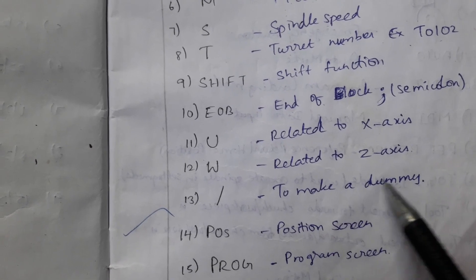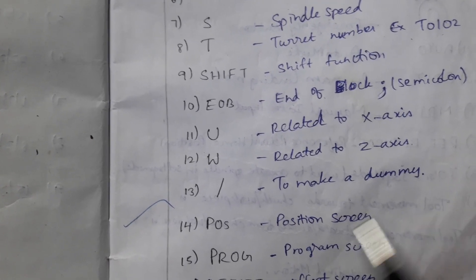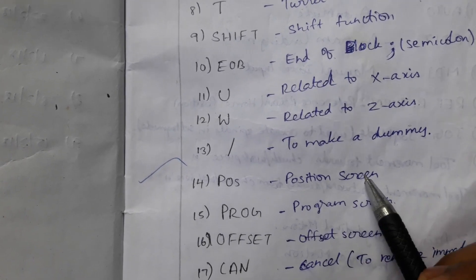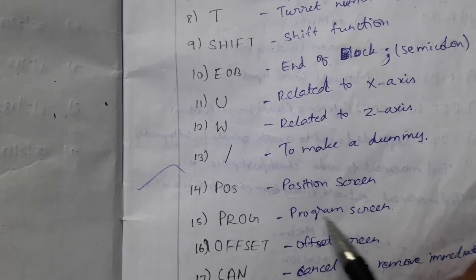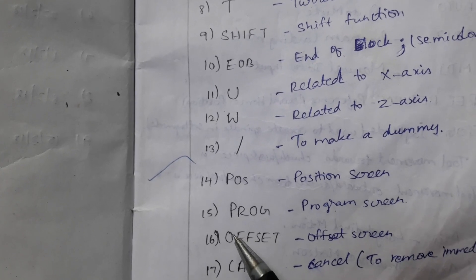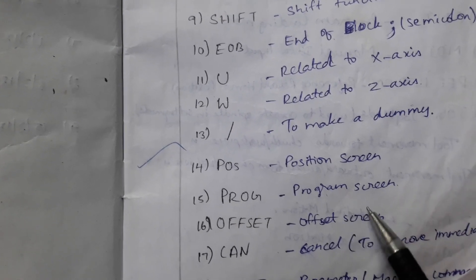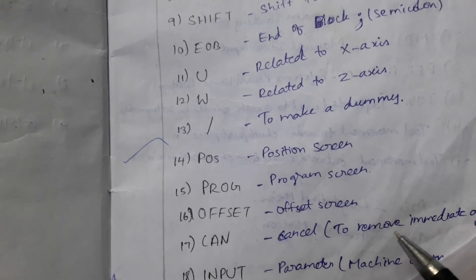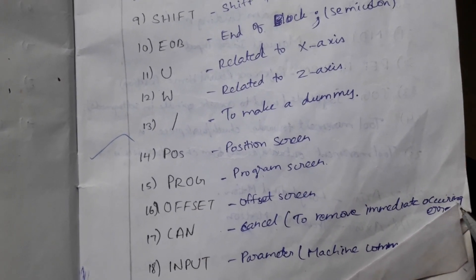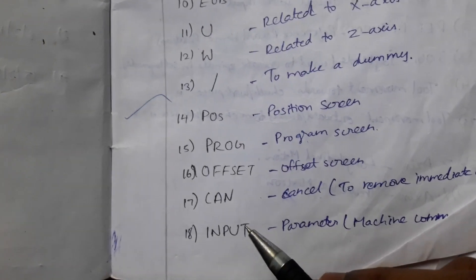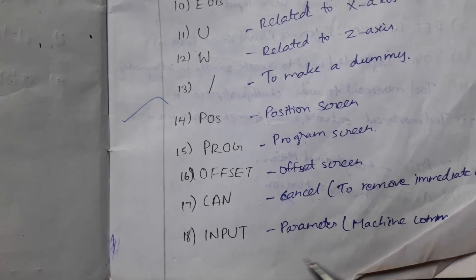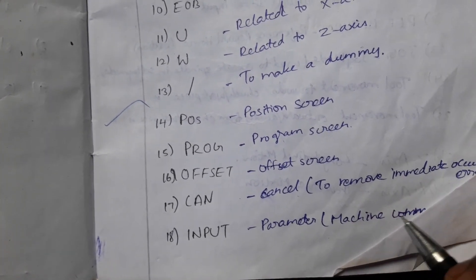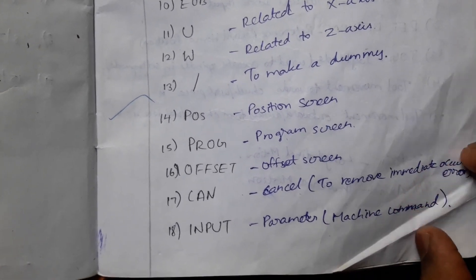To make a dummy step, POS for position screen, PROG for program screen, OFFSET for offset screen. CAN to cancel or remove immediate occurrence of error. INPUT the parameter of the machine command.